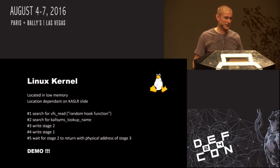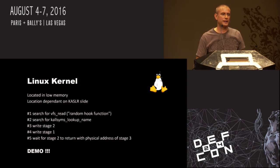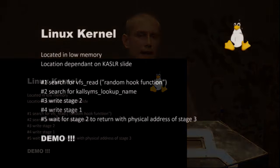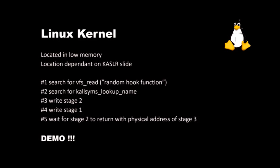Let's start by attacking Linux. The Linux kernel is located in low physical memory. If kernel address space layout randomization is not enabled, it's located at 16 megabytes in physical memory. If KASLR is enabled, it slides in 2 megabyte chunks. Once we find the kernel, we search for a function to hook — in my code I hook VFS read since it gets called pretty often and it works fine.